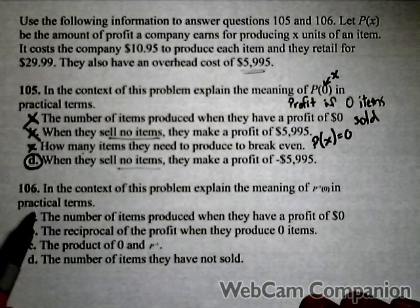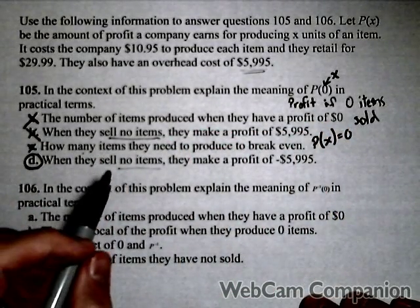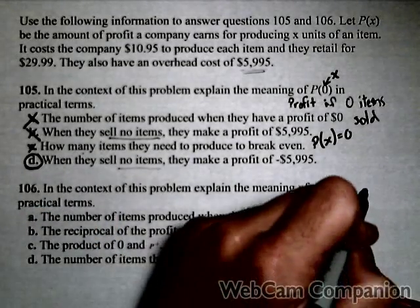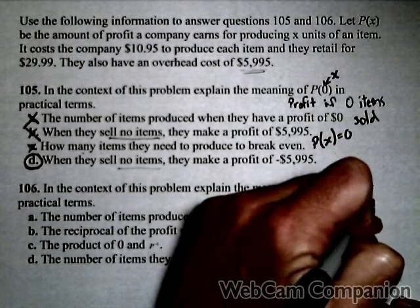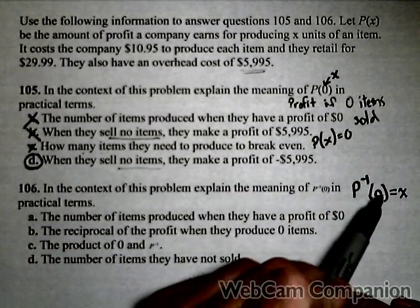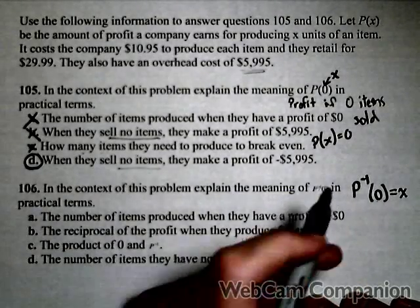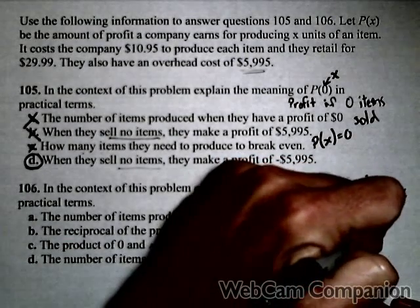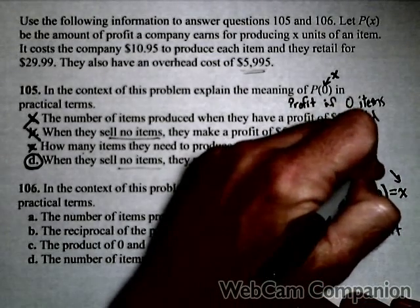In the context of this problem, explain the meaning of P inverse of 0 in practical terms. If P(x) gives the amount of profit, then P inverse is going to do the exact opposite of that. P inverse of 0 equals x. Its input is going to be profit, and its output is going to be number of units. So this is $0 profit, and this is x items or units.